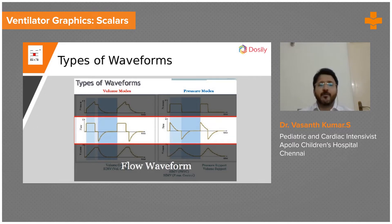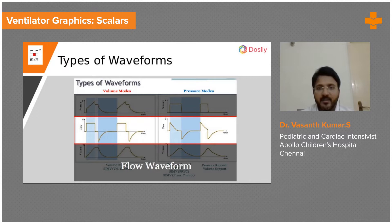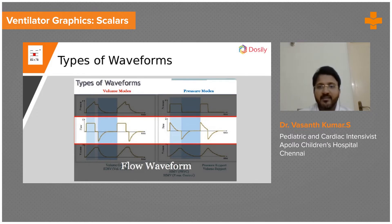Next we come to the modes. In pressure control mode, you set the pressure and you expect the tidal volume to be seen on the ventilator — pressure is the constant variable. In the pressure-time scalar, you have already set the pressure, for example 10. The ventilator will give a pressure of 10 and maintain that same pressure throughout inspiration, then go into expiration. You will see rectangular or square waveforms — this is called a constant waveform in pressure control mode.